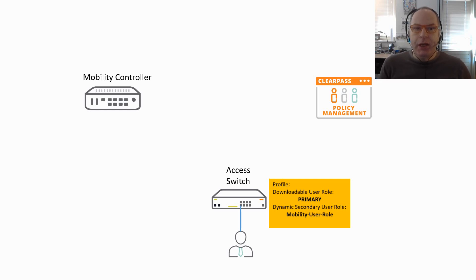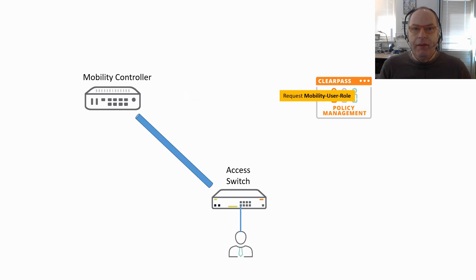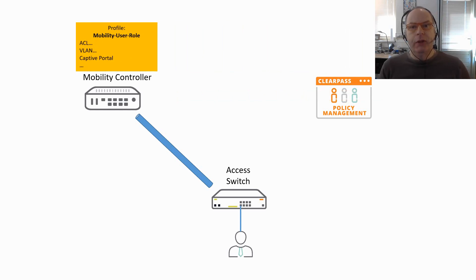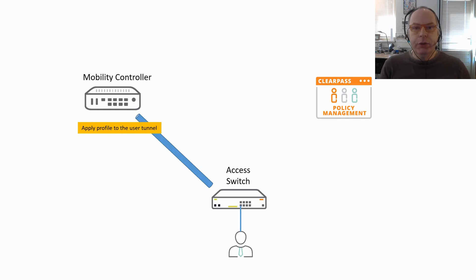The behavior between the switch and the mobility controller is slightly different when using a dynamic secondary user role. The switch tells the mobility controller to download the secondary user role from ClearPass, passing the request to the mobility controller. The mobility controller then logs into ClearPass and downloads the profile containing all relevant parameters including VLAN rules and optionally captive portal information. Once the mobility controller has received the profile, it applies the profile to the user tunnel.